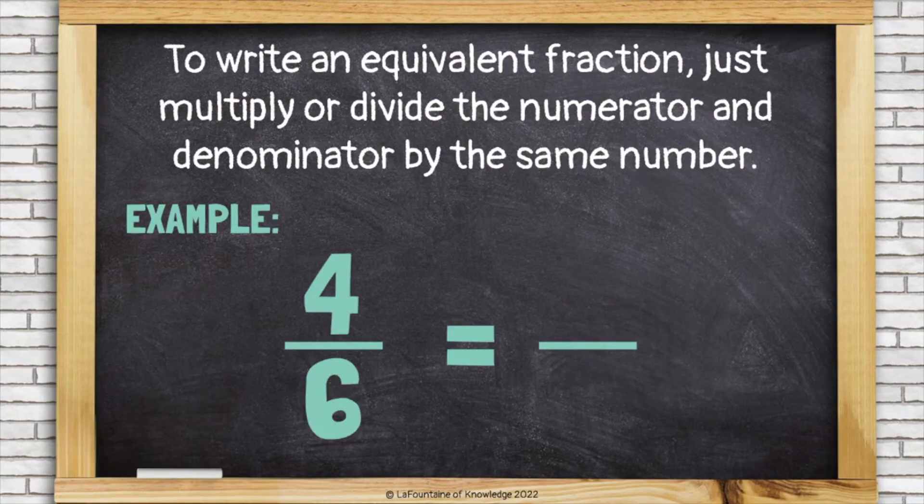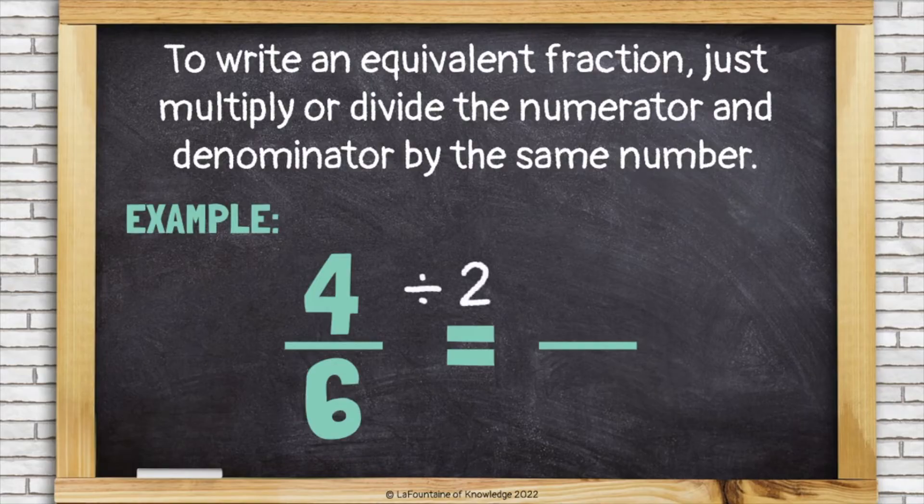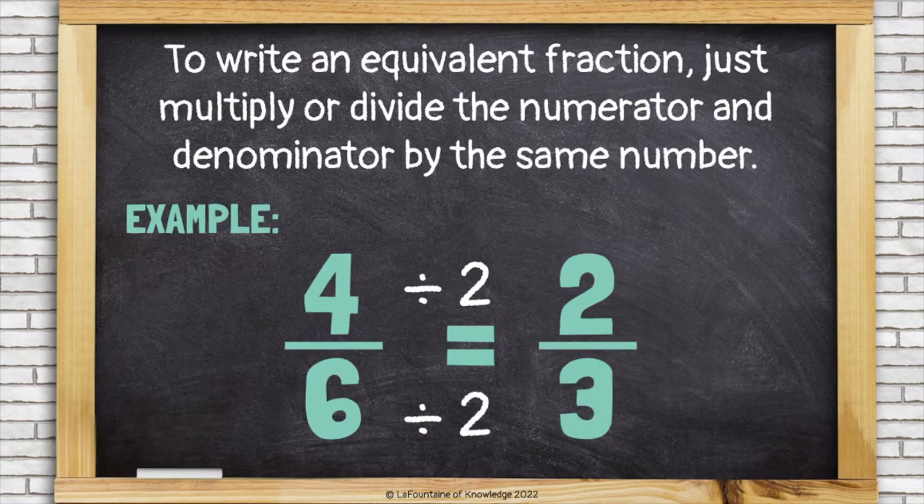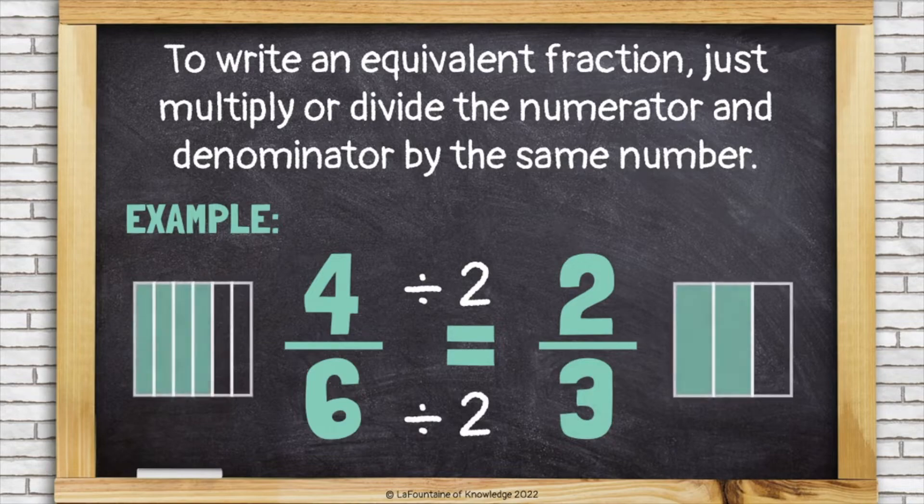I could also divide to make the numerator and denominator smaller. This is a little trickier because I have to choose a number that both of these can be divided by evenly. Four and six are both divisible by two, so let's divide them both by two. That's a common factor. Four divided by two is two, and six divided by two is three, so four-sixths and two-thirds are equivalent.